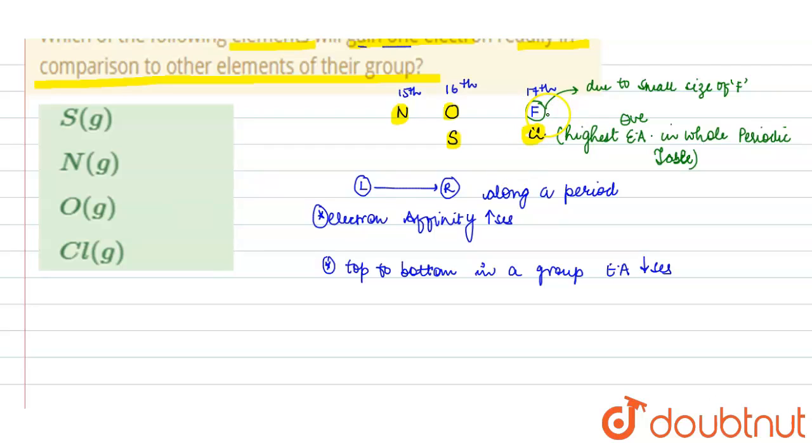Similarly, if you see the 16th group element, the electron affinity of sulfur is greater than the electron affinity of oxygen. This trend, this anomaly, is also due to the small size of oxygen.